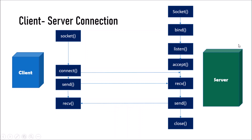Here is the diagram showing which methods are used at the client side and server side. On the server side, you first create the socket, then bind the address, use the listen method, and accept the connection from the client. Then you can receive or send data, and finally close the connection. On the client side, the client creates the socket, then connects to the server, sends and receives data, and finally can also close the connection.